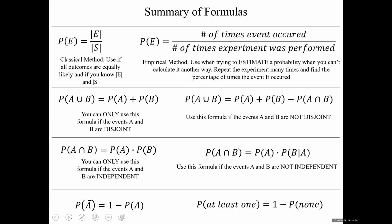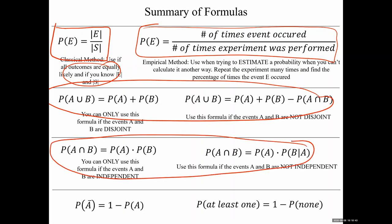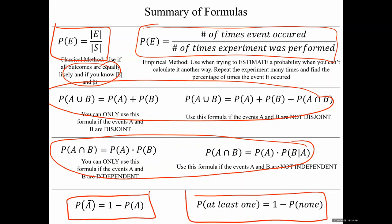Here are all the formulas we have for probabilities. We have the classical method — you can only use that if all outcomes are equally likely. If the outcomes are not equally likely, this is the empirical method. Then we have two formulas for probability of OR, two formulas for probability of AND, a formula for probability of NOT, and a formula for probability of at least one. Every probability problem we have to be able to use these somehow.